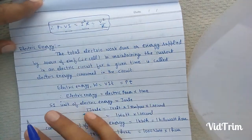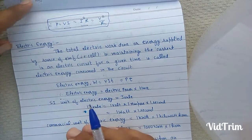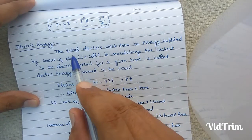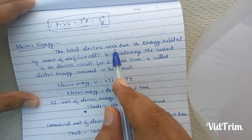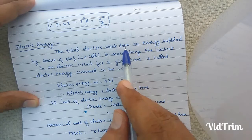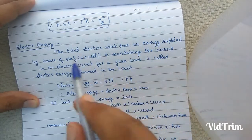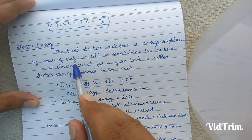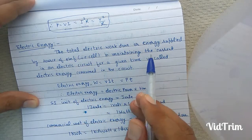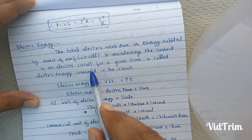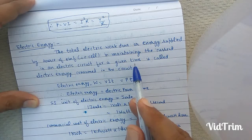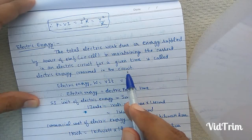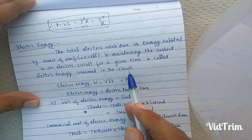Students, our next topic is electric energy. The total electric work done or total energy supplied by the source of EMF — that is, a cell — in maintaining the current in an electric circuit for a given time is called electrical energy consumed in the circuit.